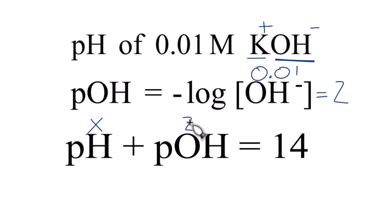So something plus 2 equals 14. 12 plus 2, that would equal 14. So the pH of our potassium hydroxide solution, 0.1 molar, is 12.